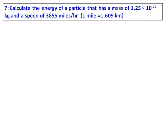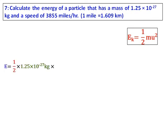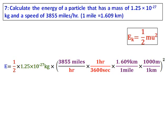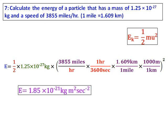Calculate the energy of a particle that has a mass of 1.25 × 10 to the power of negative 27 kilograms and a speed of 3855 miles per hour. Anytime the velocity of light is not given, the equation you will use is Ek equals half m v squared. The mass should be in kilograms and the velocity should be in meters per second, so do the appropriate conversions. Be very careful about what goes in the denominator and numerator so that units cancel correctly. The final answer should have units of kilogram meter squared second inverse squared, which is basically joules. The energy comes as 1.85 × 10 to the power of negative 21 joules.